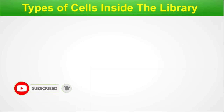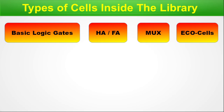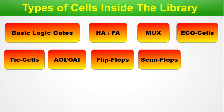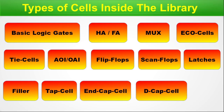Types of cells inside the standard cell library. This slide touch-bases all the names of the types of cells. Inside a standard cell library you will find: basic logic gates (AND, OR, NOT etc.), half adder and full adder, multiplexer, ECO cells (used in engineering change order steps), tie cells, AND-OR-inverter / OR-AND-inverter, multiple flip-flops, scan flip-flops, latches, filler cells, tap cells, end-cap cells, decap cells, and clock cells. All these categories of cells will be present inside the cell library.